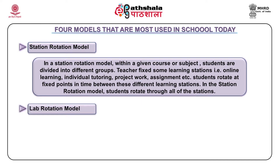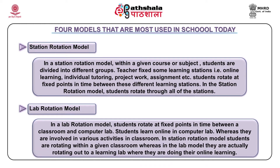The third is the lab rotation model. Students rotate at a fixed point in time between a classroom and the computer lab. Students learn online in computer labs, while they are involved in various activities in classrooms simultaneously. In the station rotation model, students rotate within a given classroom, whereas in the lab model, they rotate out to the learning lab where they do their online learning.